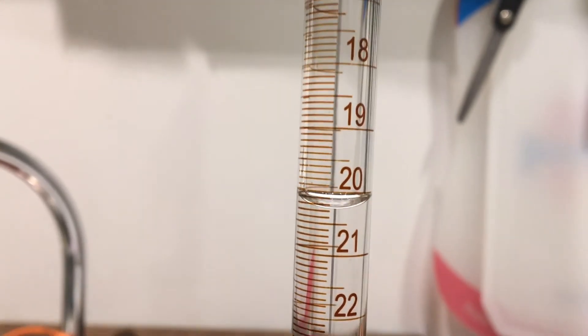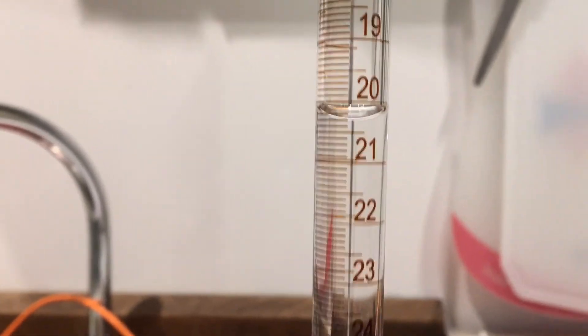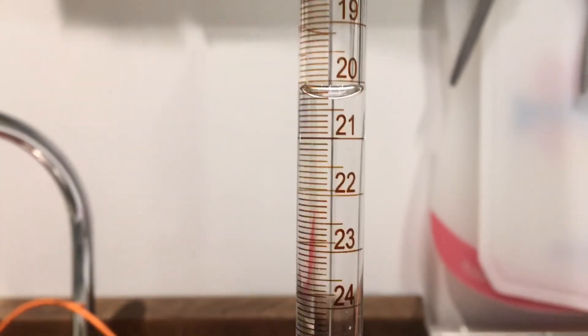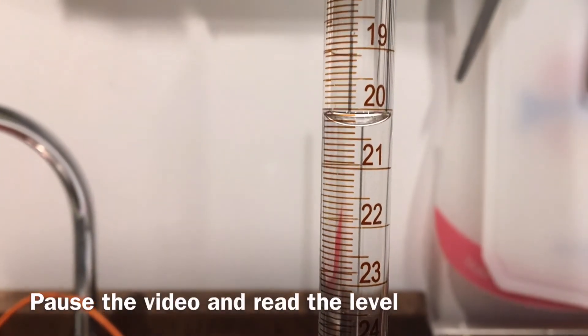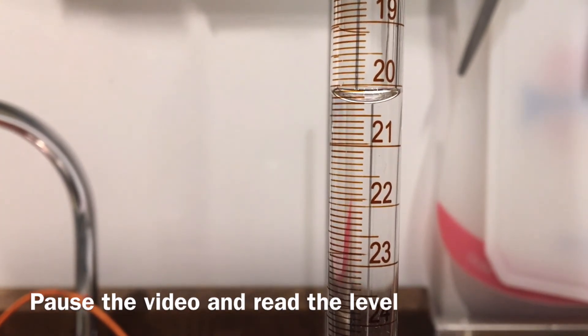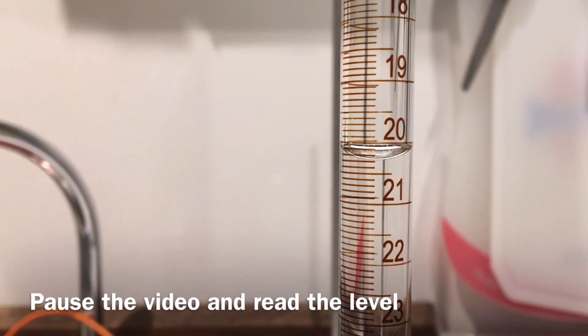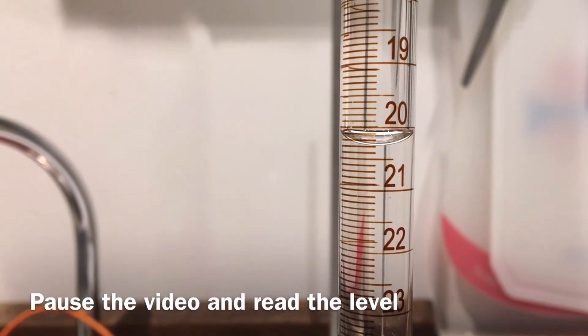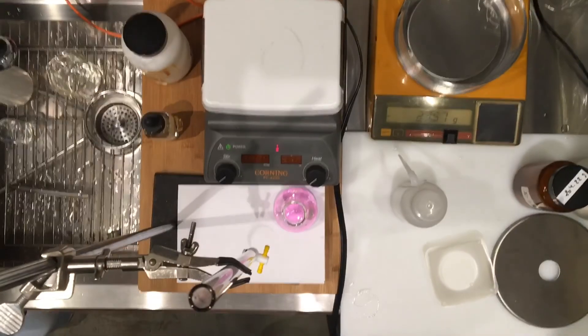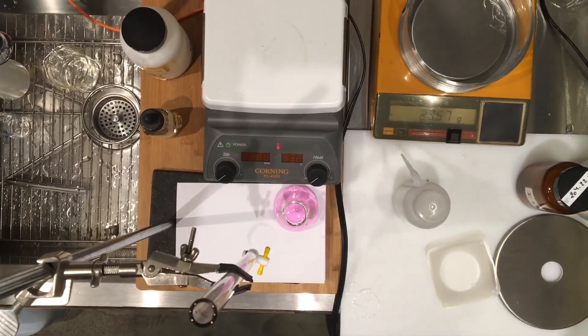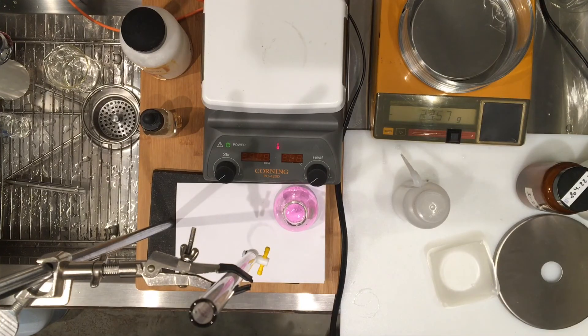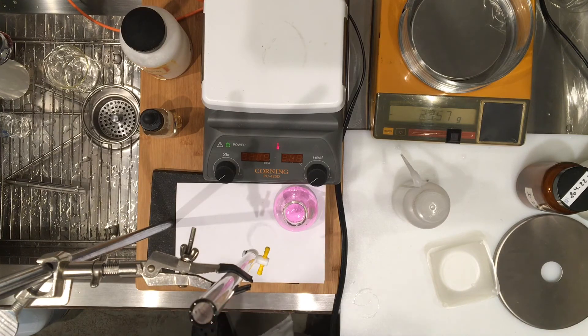Which is down to the hundredths of a milliliter, so you have to estimate the last digit. I'm going to get this thing just right for you because it has to be really parallel. Go ahead and read it. I'm going to let you record that, and this volume of sodium hydroxide together with the 0.411 grams will allow us to calculate the concentration of the sodium hydroxide.